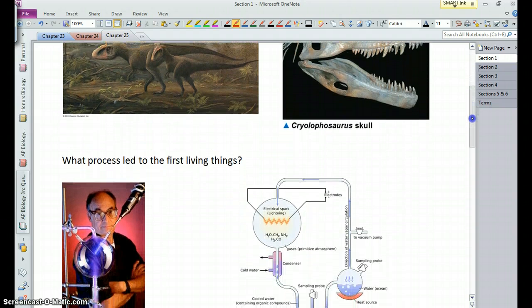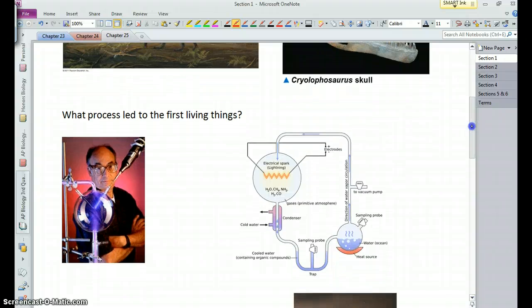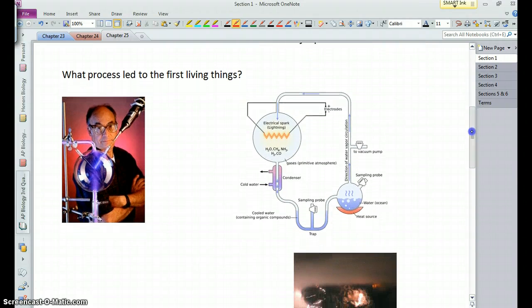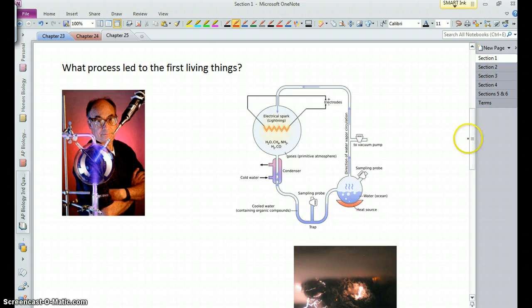So the first question is, where did the first living things come about? Well, of course, we have all sorts of mythology that explains this, and different cultures and religions have different ways of explaining this, but we're going to stick to scientific explanations, and that is, explanations that can be tested, in some way at least, by the scientific method.